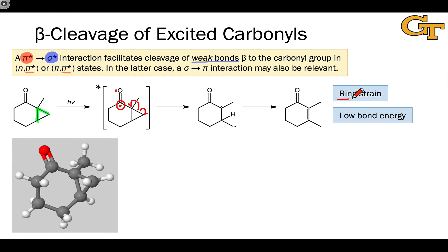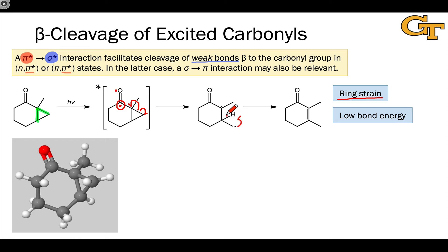What's driving this process is the release of ring strain. From here, a number of different things can happen, but what's occurring is a kind of internal disproportionation process to give rise to an alkene. This may be intra- or intermolecular depending on the circumstances, but the electron flow involves a hydrogen transfer that facilitates the formation of a carbon-carbon pi bond between the alpha and beta carbons.